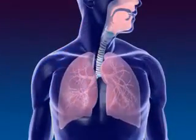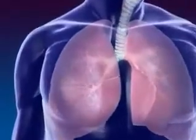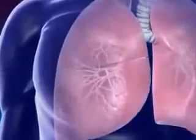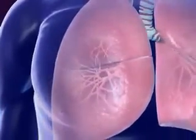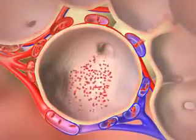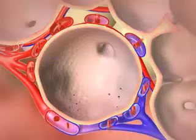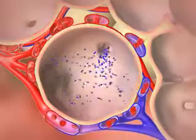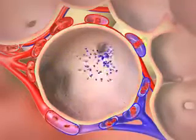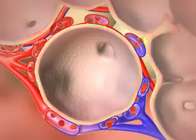Oxygenated air goes from the nose to the pharynx, larynx, trachea, bronchus, and alveoli. By the process of diffusion, oxygen in the air moves from the alveoli to the capillaries. Carbon dioxide moves from the capillaries to the alveoli and is exhaled. This process is called respiration.